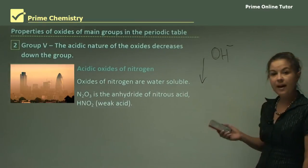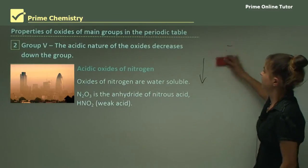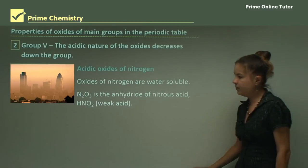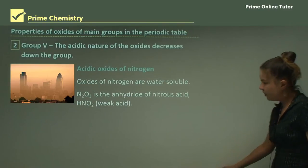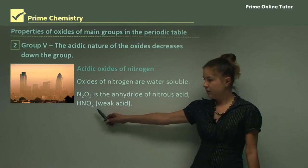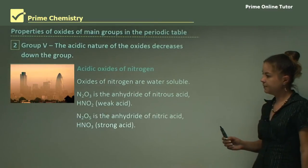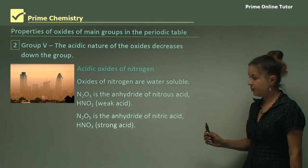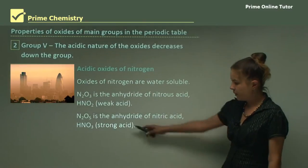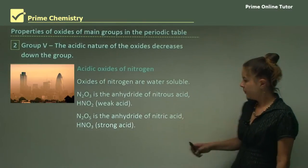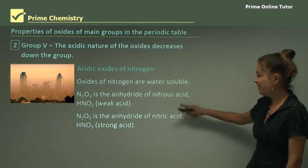Oxides of nitrogen are water soluble. N2O3 is the anhydride of nitrous acid HNO2, a weak acid. The word anhydride simply means there's no hydrogen and no water. If you look, HNO2 has a hydrogen, N2O3 doesn't. N2O5 is the anhydride of nitric acid HNO3, a strong acid. They differ by one oxygen group but have different names. Don't get them confused.